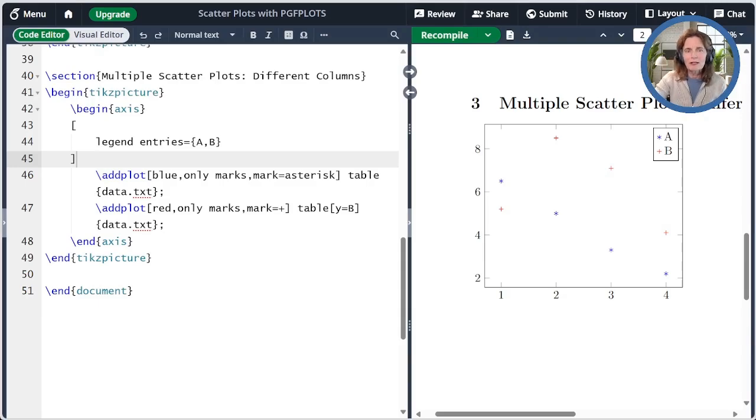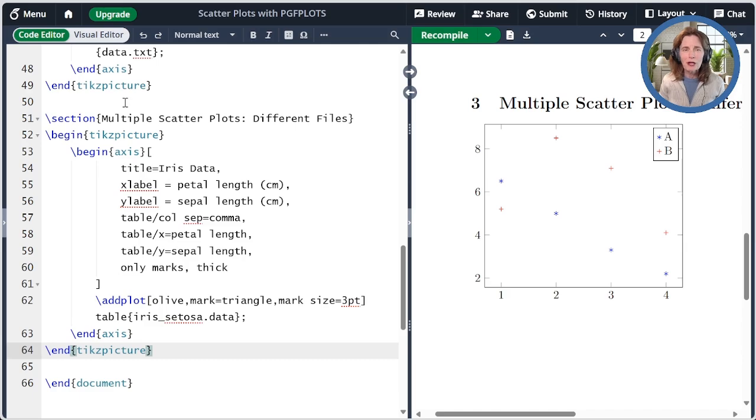Another use for scatter plots is plotting data from different files. I've split the iris data into three files, one per iris type. Let's work on plotting that. For the axis options here, I have put the title, the xlabel, and the ylabel as before.